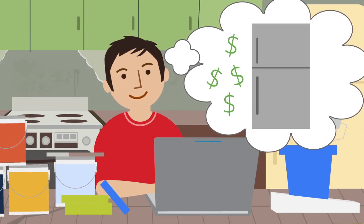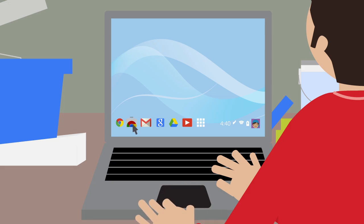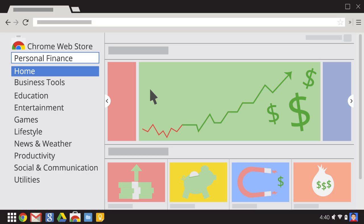So when Marty wants an app to help him keep track of his expenses, he launches Chrome and goes to the Web Store. It doesn't take him long to find what he needs.